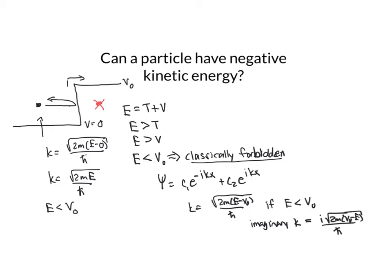So i times i is -1 times a minus is plus. And I end up with, in that region where I have V₀ greater than E,